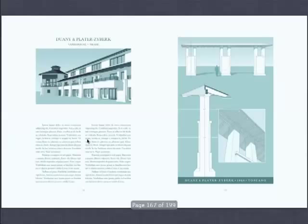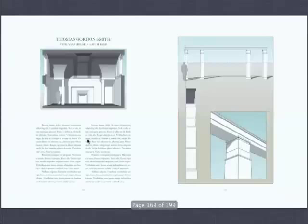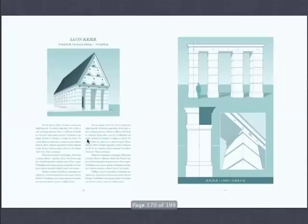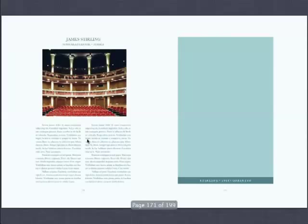Skidmore, Owings and Merrill. Thomas Gordon Smith — I don't know how this dean of Notre Dame explains his order to his students. Leon Krier, absolutely magnificent — one of the Driehaus Award winners, but is he a classicist? Of course he is. James Stirling, doing extraordinary things. One of our professors, Jorge Hernandez. Hilmer Sattler, doing a Doric in the subway of Berlin.